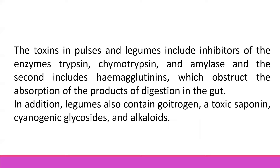Toxins in pulses and legumes include inhibitors of the enzymes trypsin, chymotrypsin, and amylase. The second group includes hemagglutinins, which obstruct the absorption of products of digestion. In addition, legumes contain goitrogens, toxic saponins, cyanogenic glycosides, and alkaloids.